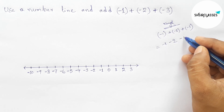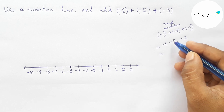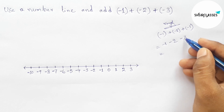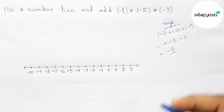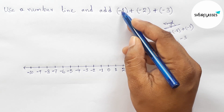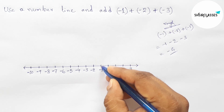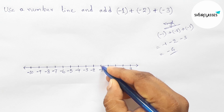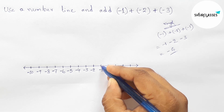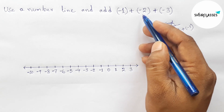Removing the first bracket gives us minus 1 minus 2 minus 3. Adding all of these, since all the signs are the same, gives minus 6. Now, first marking minus 1 on the number line.